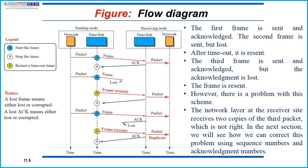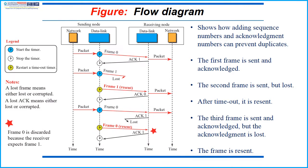In the next section we will see how we can correct this problem using sequence numbers and acknowledgement numbers. This flow diagram shows how to add sequence numbers and acknowledgement numbers to prevent duplicates. The first frame is sent and acknowledged. The second frame is sent but lost; after timeout it is resent. The third frame is sent and acknowledged but the acknowledgement is lost, so the frame is resent. To avoid the problem, we add an acknowledgement number for each acknowledgement sent, and also a frame number for each frame being sent.